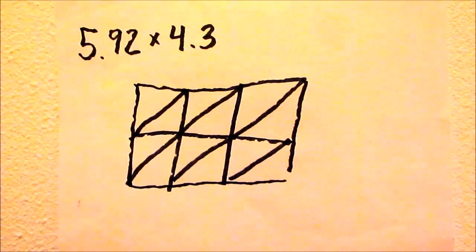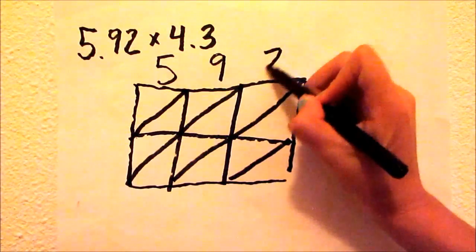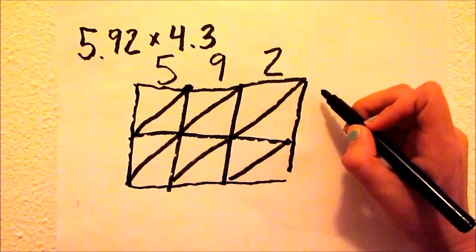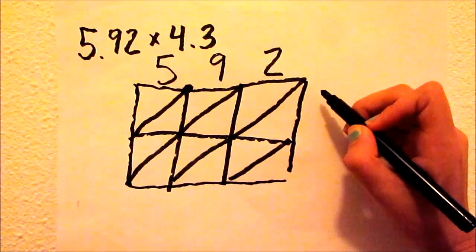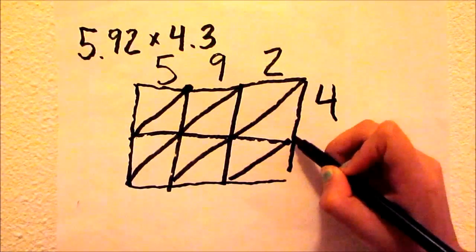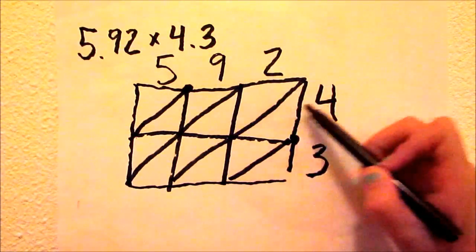So we write 5.92 across the top with our decimal and 4.3 down the right side of our 3 by 2 rectangle with our decimal. Next, we are ready to multiply where each number meets.